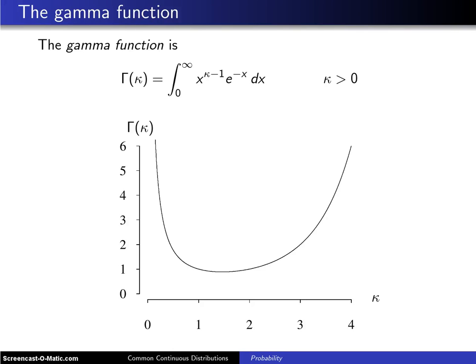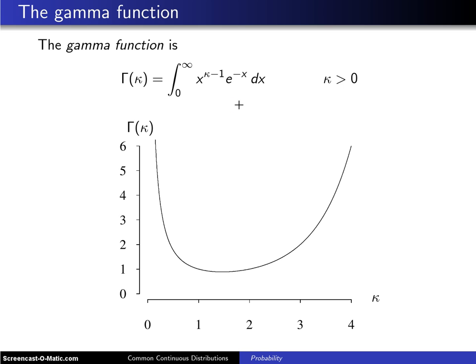The gamma function shows up quite a bit in probability, so the following two slides do a quick introduction or review of the gamma function, depending on whether you've seen it in the past. Keep in mind that this is the gamma function — it is not the gamma distribution. The definition of the gamma function is: gamma of kappa is the integral from 0 to infinity of x raised to the kappa minus 1 power, times e to the minus x, dx, for kappa greater than 0. You can think of the gamma function as a smoothing of the factorials.